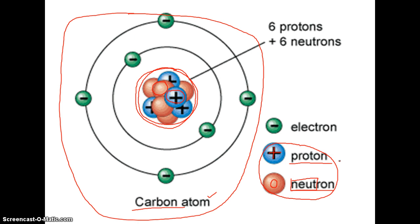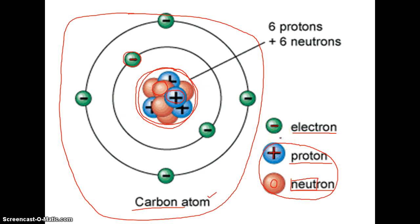Now look around the outside of the nucleus. We have these green spheres with a minus sign in the middle of them — they're zipping around the outside of the nucleus. These subatomic particles are called electrons. Electrons are subatomic particles that have a negative charge. So: protons are positive, neutrons are neutral with zero charge, and electrons are negatively charged. There are multiple shells, orbitals, or levels that these electrons fit into.